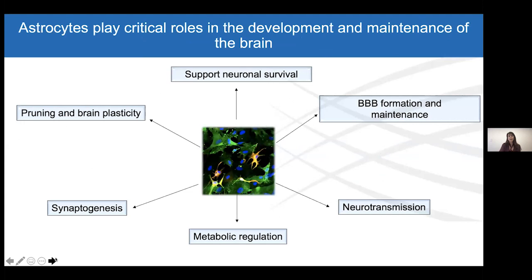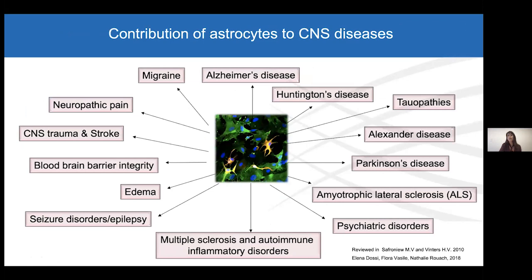Among the roles of astrocytes: not only neural support and survival, but also BBB formation and maintenance, neurotransmission, metabolic regulation, synaptogenesis, pruning, and brain plasticity. All these functions help generate a functional network and proper brain function. Due to their many roles, any dysfunction in astrocytes can contribute to neurodegeneration and CNS disease. Astrocytes have been implicated in neurodegenerative diseases such as Alzheimer's, Huntington's, Parkinson's, and ALS, but also in neuropsychiatric disorders and autoimmune inflammatory disease. It's increasingly evident that astrocytes play a role and contribute to these diseases.